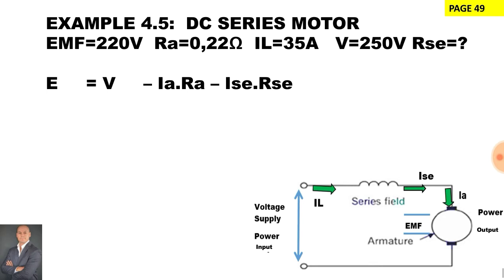Now to manipulate the equation to find the unknown variable which is the value of the series winding, it's going to be voltage minus the generated EMF minus the volt drop across the armature divided by the current in the circuit.